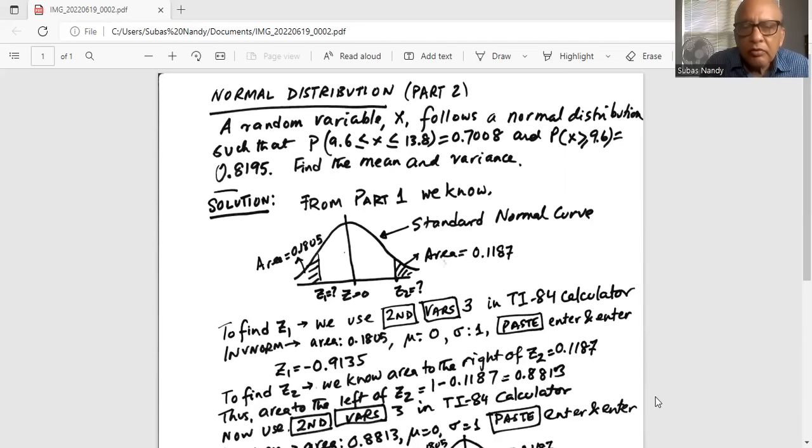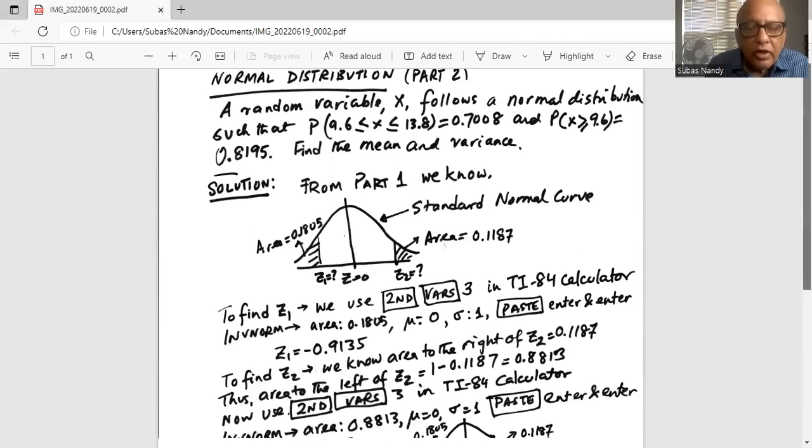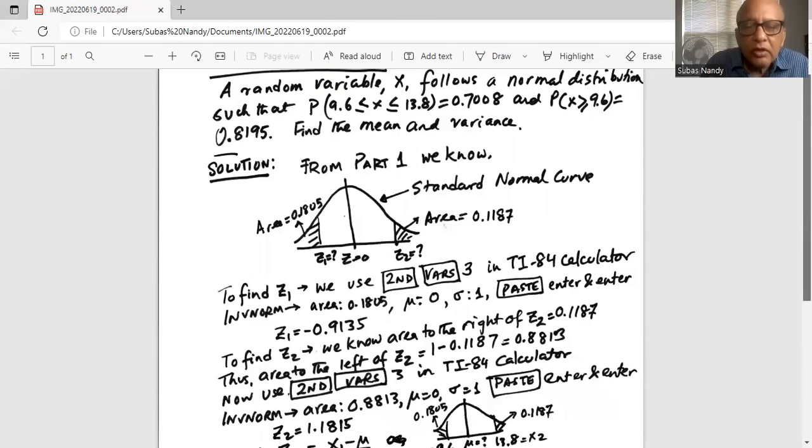Now z1 corresponds to the random variable 9.6 and z2 corresponds to the random variable 13.8. In order to find z1 we will use calculator TI-84. We will do second vars 3. And area to the left of the unknown z1 is 0.1805 meaning mu is 0 and standard deviation is 1. And we paste enter and enter. We get the value of z1 is minus 0.9135. This is the standard normal variable corresponding to the random variable x of 9.6.